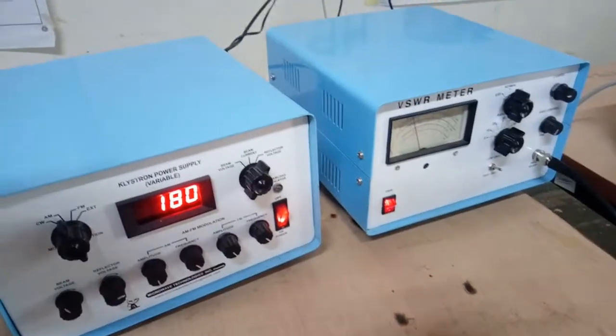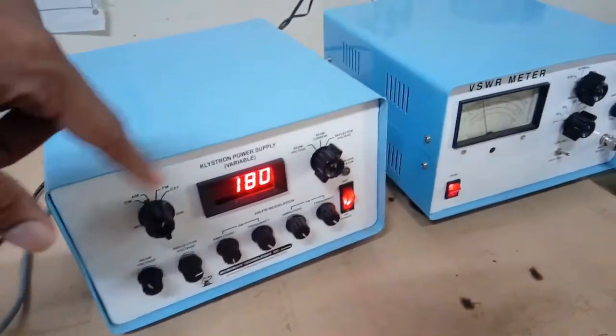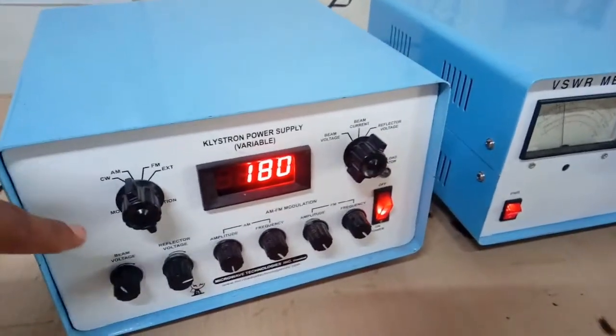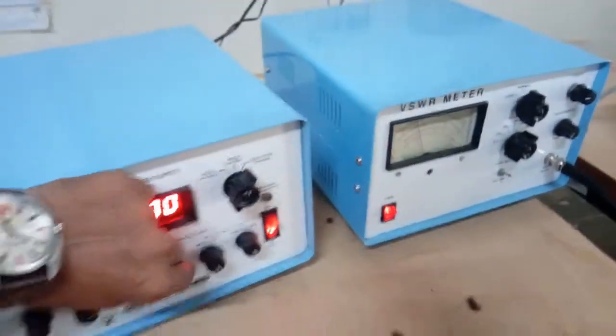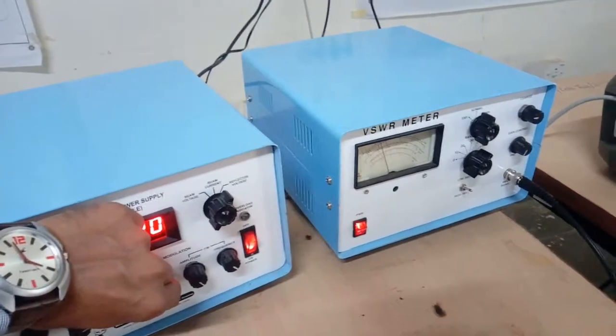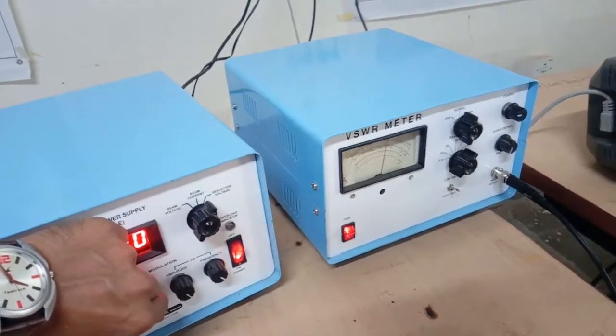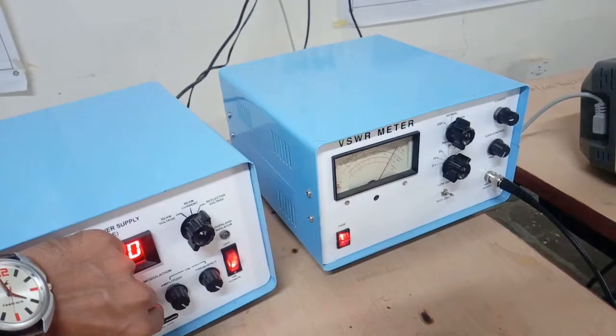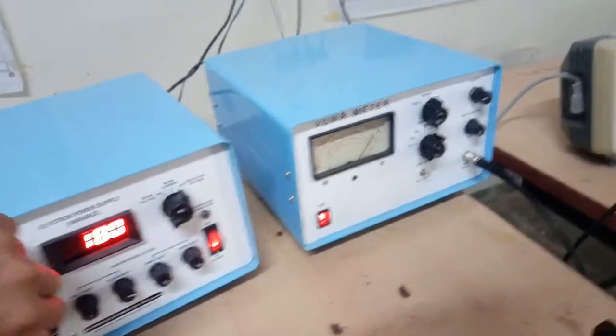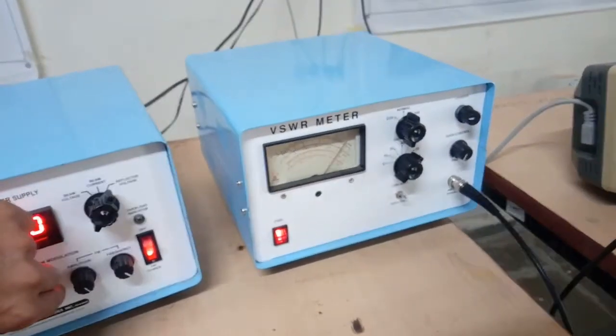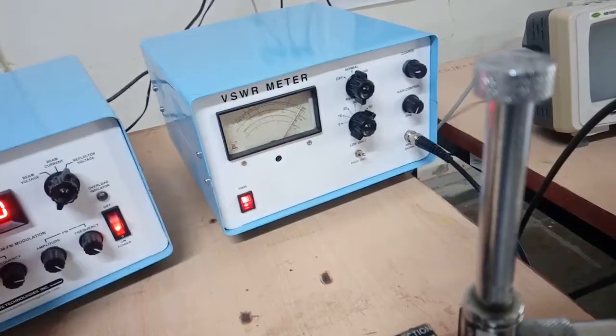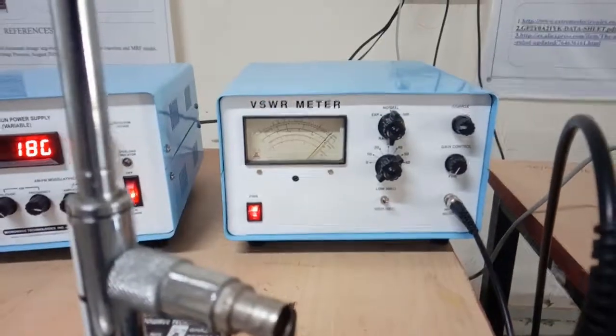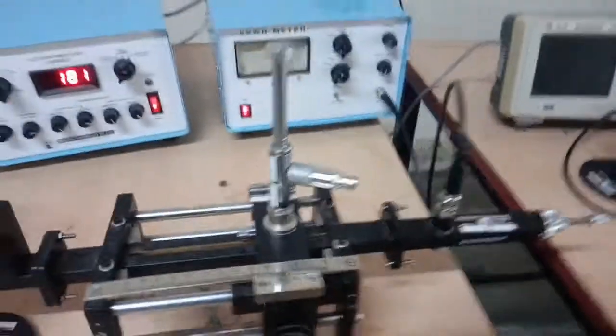Now we will tune the glystron oscillator using the amplitude and frequency knob as the power supply is selected with mode selection feature, amplitude modulation mode. So we will change frequency or amplitude button and we will set the VSWR meter with the 0 dB scale. So you set the VSWR meter with 0 dB scale at 40 dB. So that is our reference input.